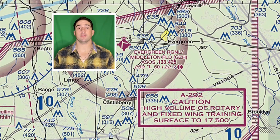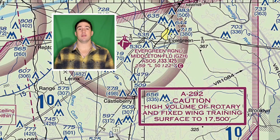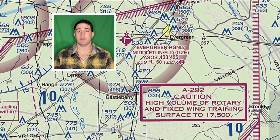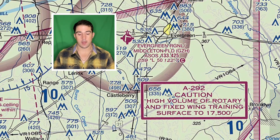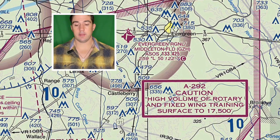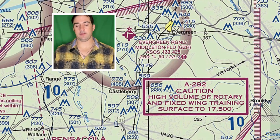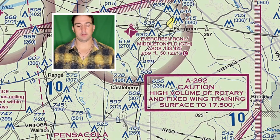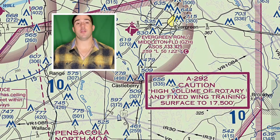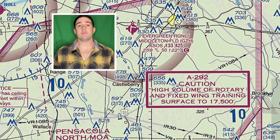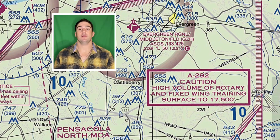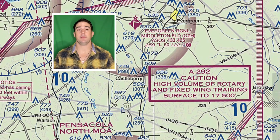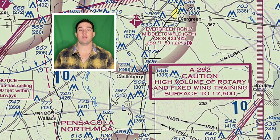Next we have alert areas. Can you fly through an alert area? Yes, you can. These alert areas are depicted on sectionals to inform non-participating pilots of areas that may contain a high volume of pilot training or unusual aerial activity. Pilots should be particularly alert when flying through these areas. So yes, you can fly through one — however, you need to be alert, be listening to the radio, maintain airspace surveillance, the whole nine yards when transiting through an alert area.